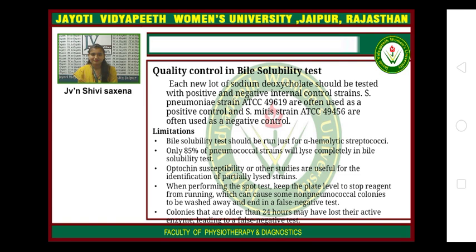Limitations: The bile solubility test should be run only for alpha-hemolytic streptococci, as approximately 85% of pneumococcal strains lyse completely in the bile solubility test. Optochin susceptibility or other studies are useful for the identification of partially bile-soluble Streptococcus pneumoniae strains. When performing the spot test, keep the plate level to stop reagent from running, which can cause some pneumococcal colonies to be washed away, resulting in a false negative. Colonies older than 24 hours may have lost their active enzyme, also leading to a false negative result.